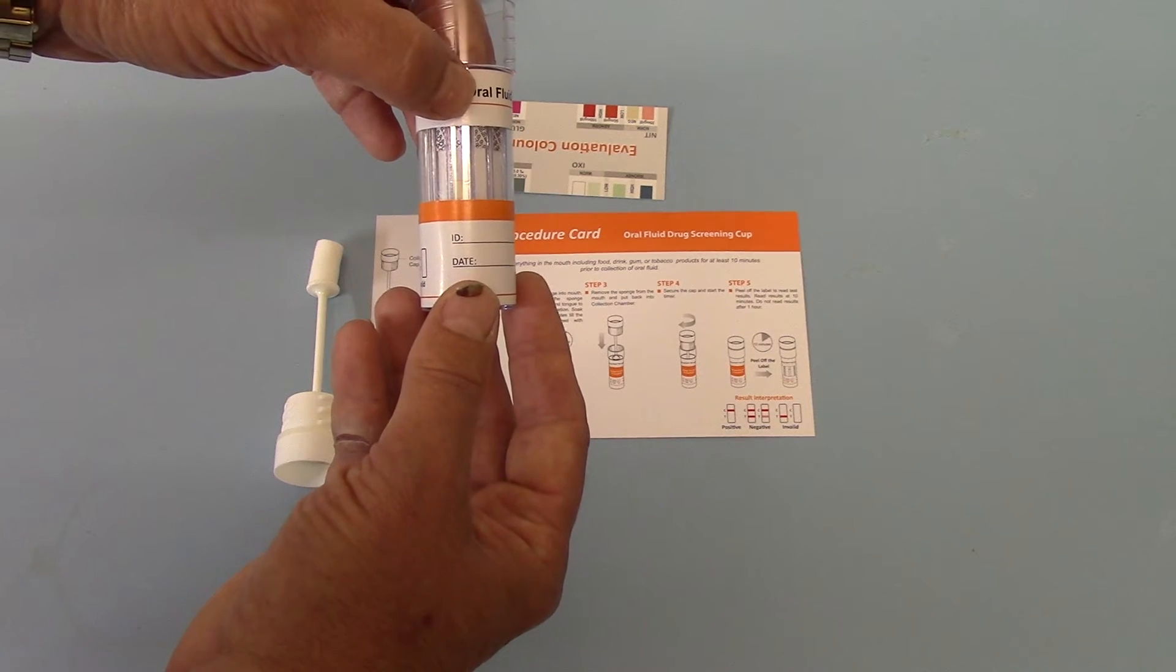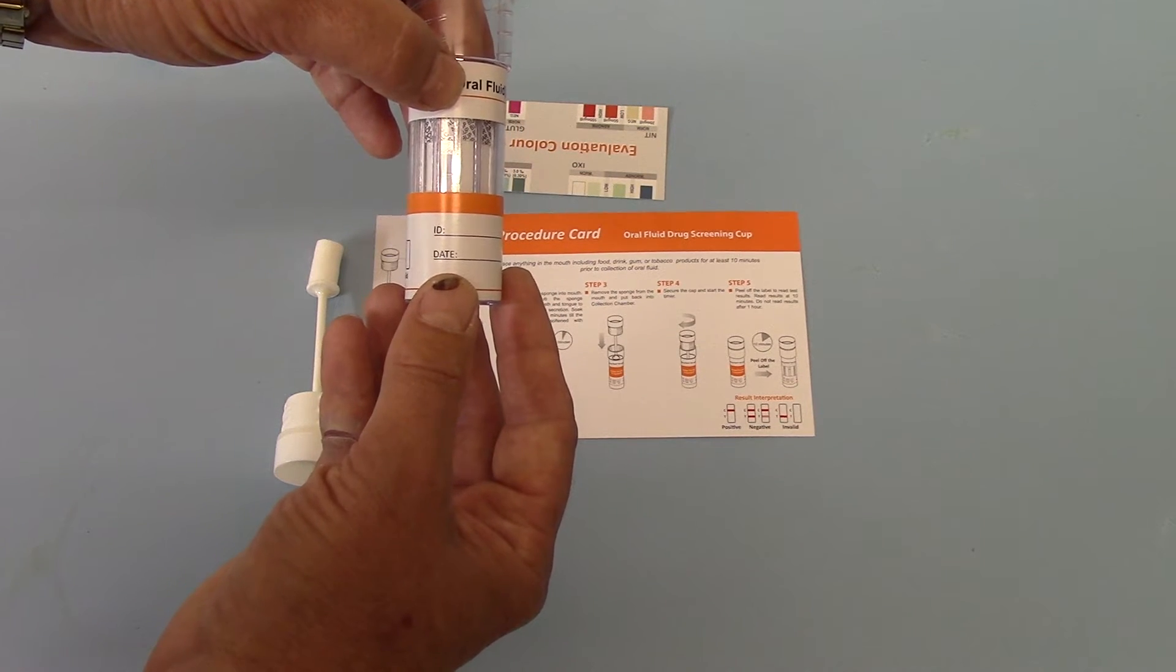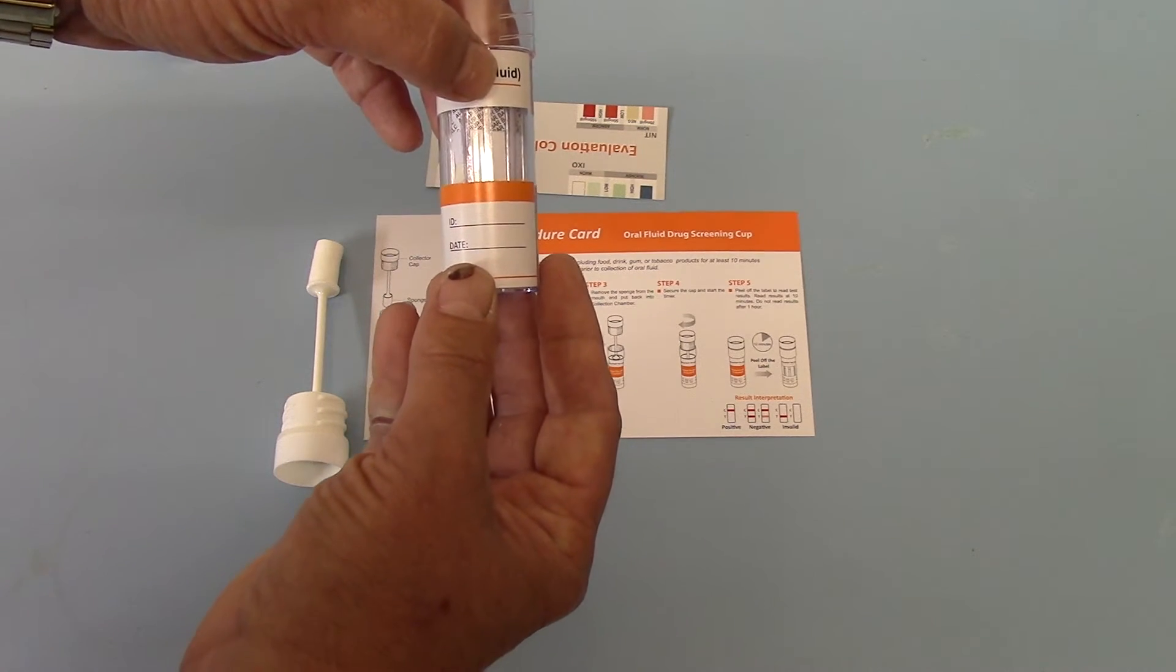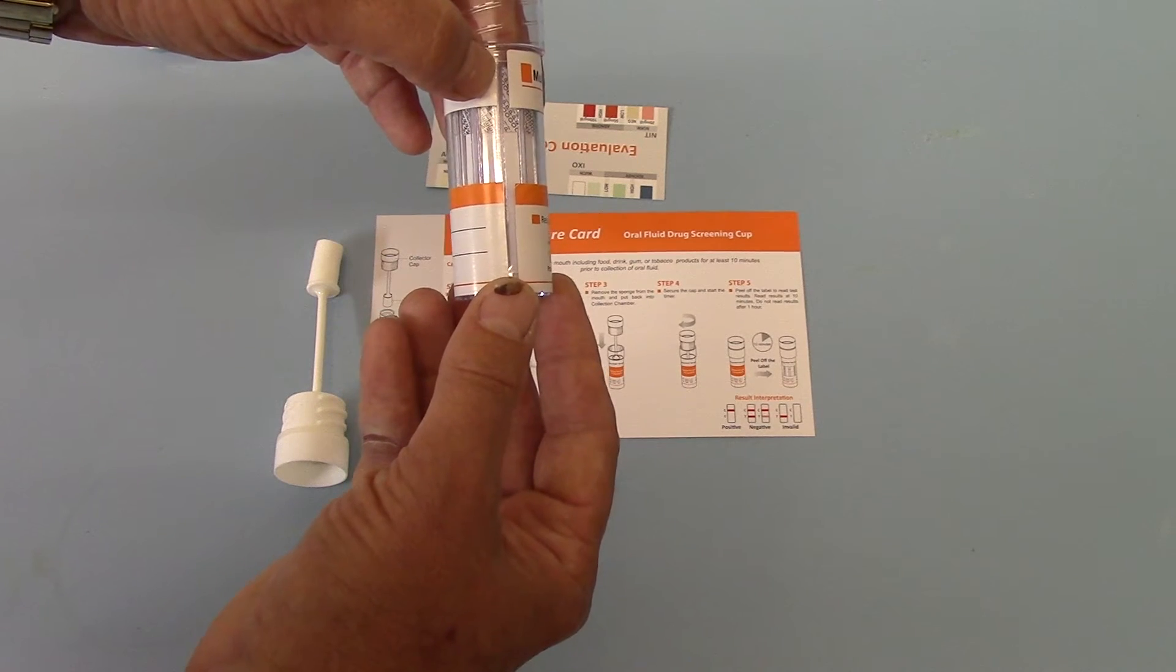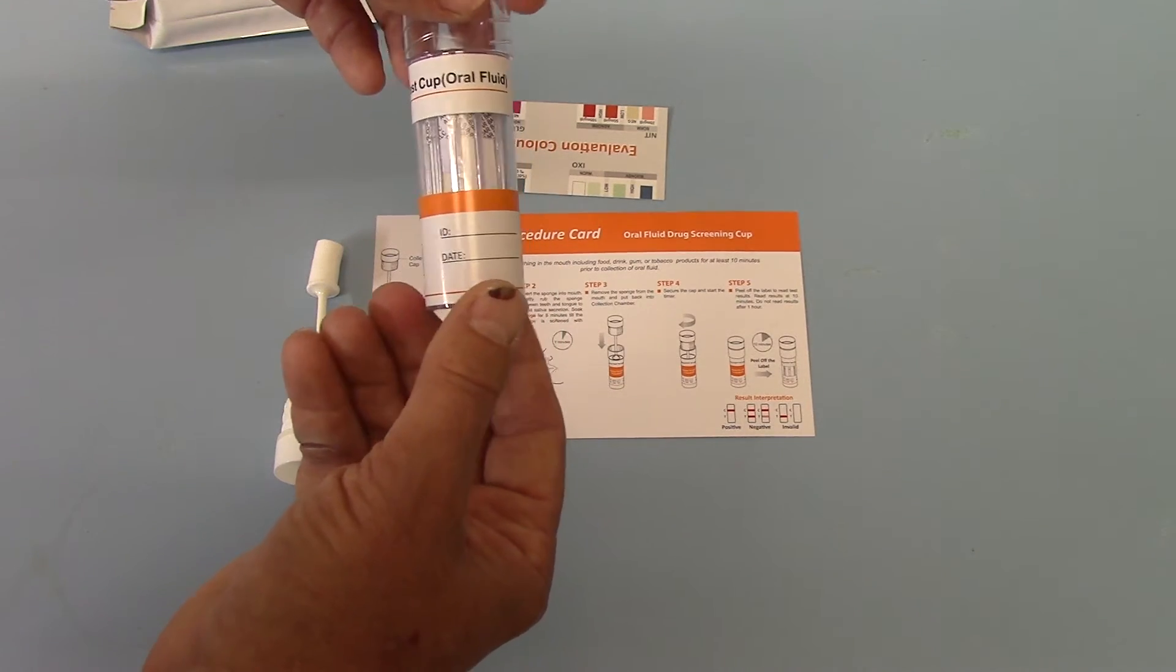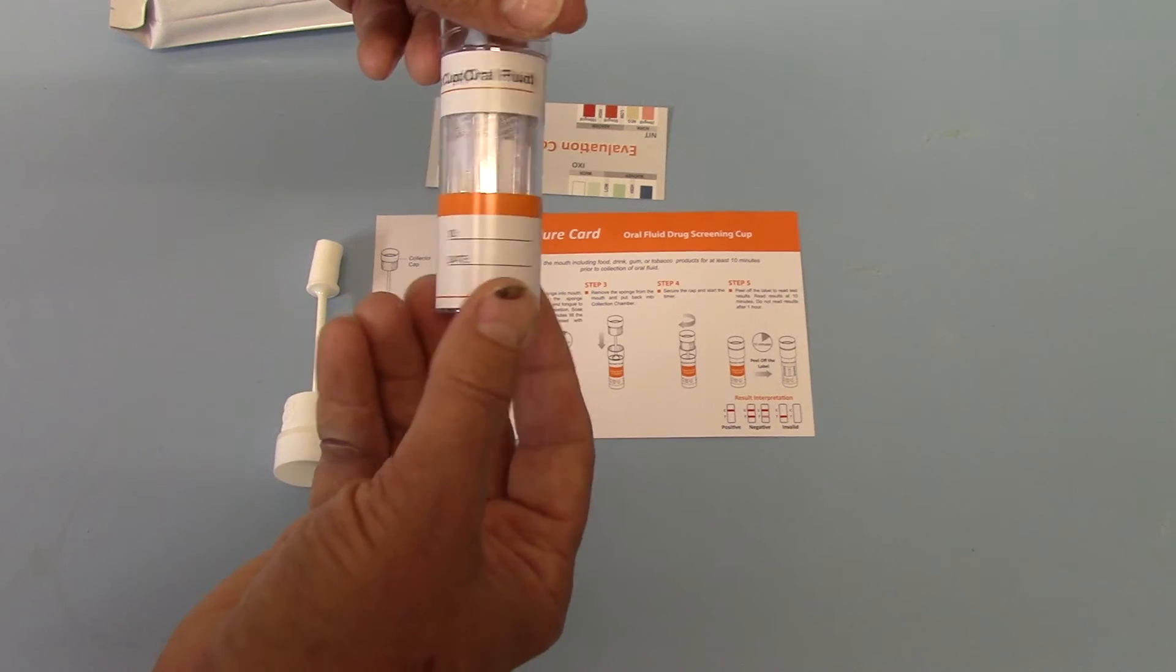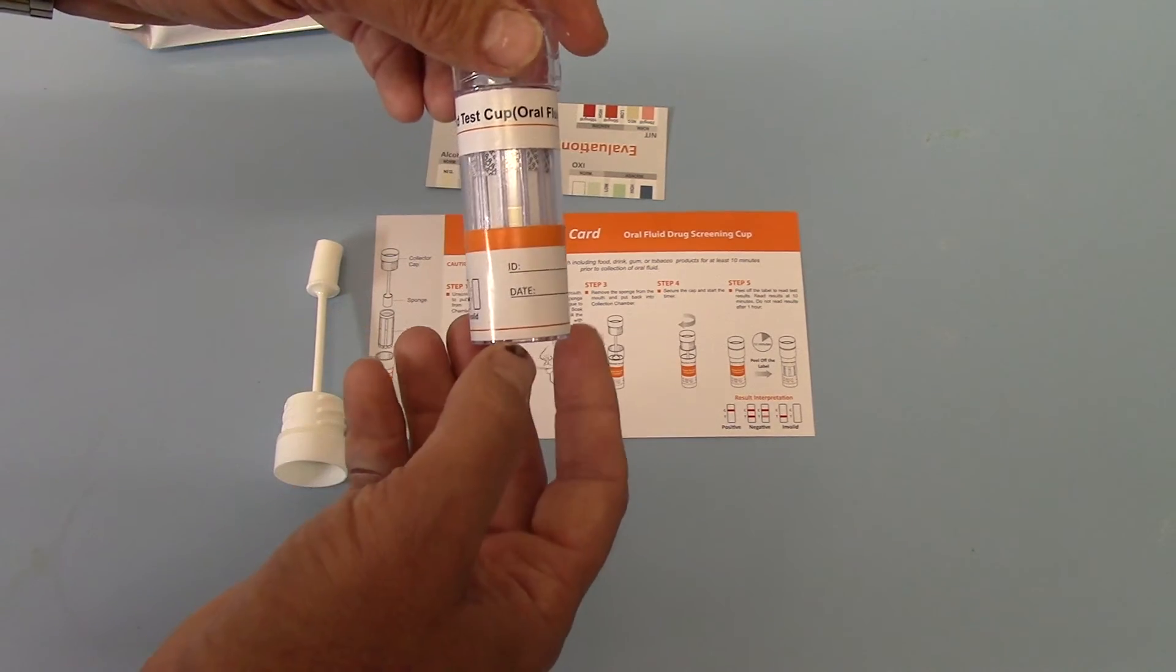PCP, ALC for alcohol, BUP for buprenorphine, BAR for barbiturates, MET for methamphetamine. So, around the circumference are your 11 drugs and one alcohol test.